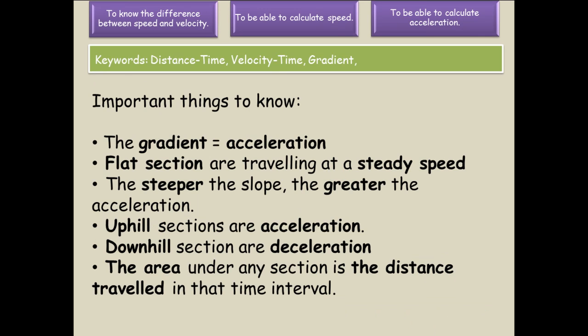Some important things to know on a velocity-time graph: the gradient is the acceleration. When there is a flat section, it is travelling at constant speed. The steeper the slope, the greater the acceleration. When the line goes upwards, that is acceleration. When it goes downwards, that is deceleration. The area under the curve gives the distance travelled.